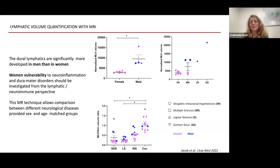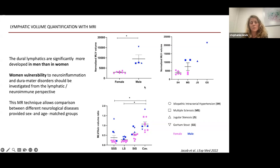In the topic of IIH, I think this is a very interesting pattern because IIH affects mainly females and not males. So probably there is something to explore here, like why females have less lymphatic volume than males.